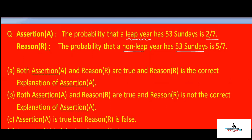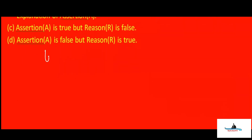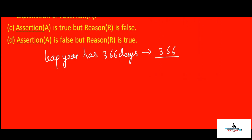Let us first analyze whether the assertion is true. A leap year has 366 days. If we divide 366 by seven, we get 52 weeks plus two extra days. So a leap year always has 52 complete weeks — meaning 52 of every day — plus two extra days.